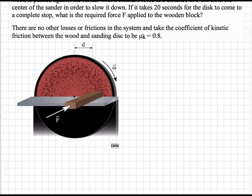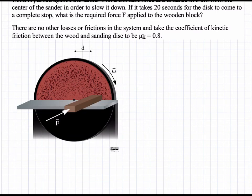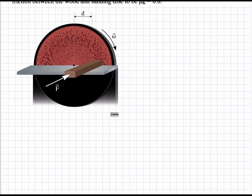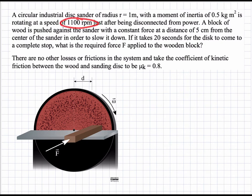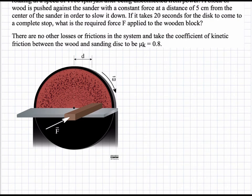This is clearly an angular momentum problem and we are going to look at two different states. We start at state one where the disc is spinning with initial angular velocity omega 1. We are given omega from 1100 RPM. In the final state, state two, omega equals zero, which means we will have no angular momentum, because angular momentum is I times omega and we have no angular velocity.